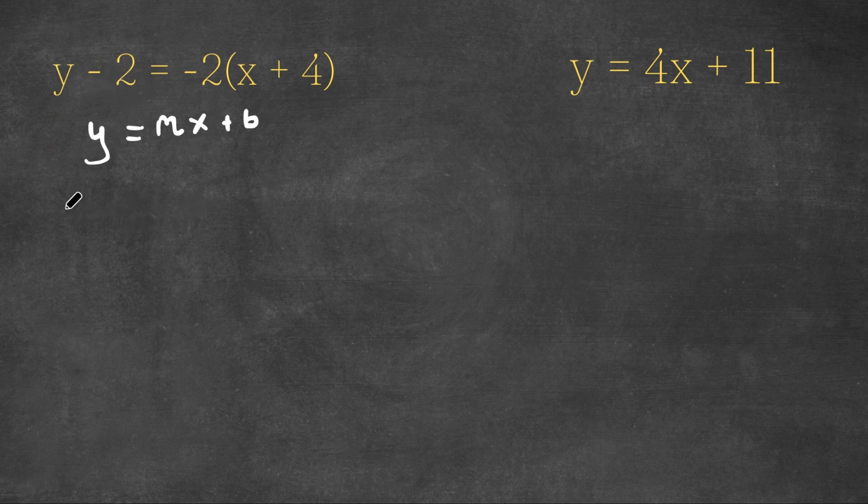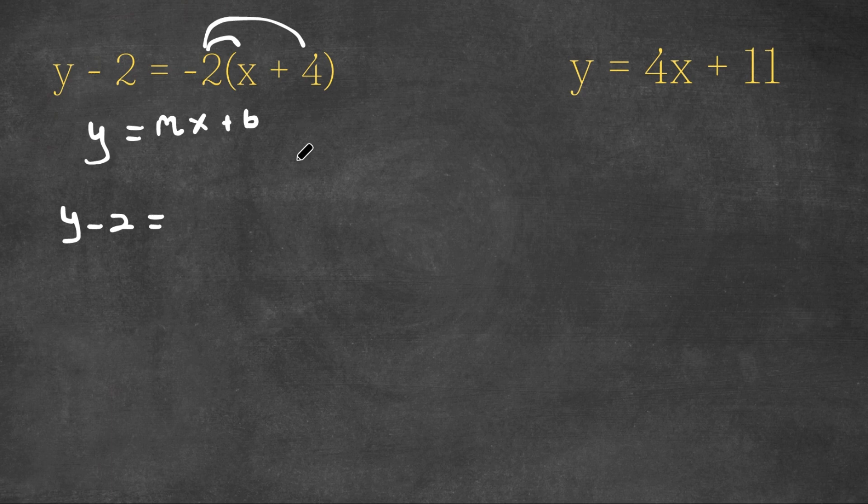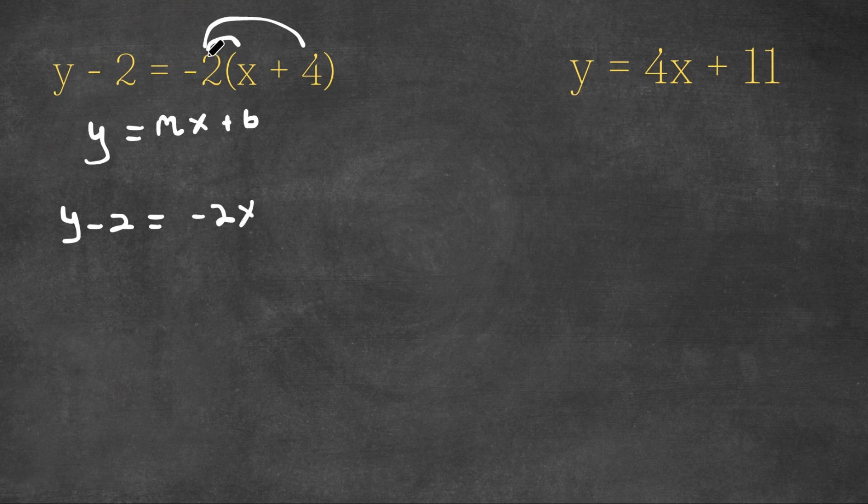So what we're first going to do, we have y minus 2 is equal to, now let's distribute the negative 2 to the parentheses. So we have negative 2 times x, as well as negative 2 times 4. So negative 2 times x is negative 2x, and negative 2 times 4 is negative 8.